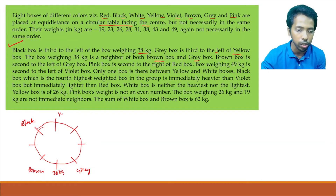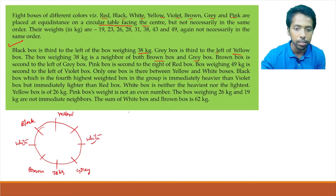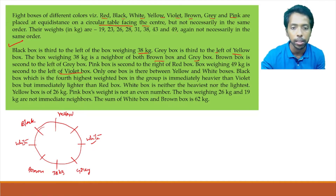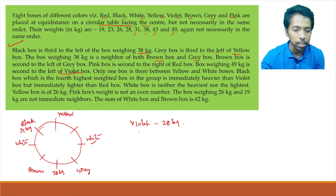Gray box is third to the left of yellow box, so yellow comes here. Only one box is between yellow and white, so white can come on either side — mark both as possible cases. Black box is the fourth highest weighted box, meaning weights ranked first through fourth give black box a weight of 31 kg. The fourth highest is immediately heavier than violet box, making violet 28 kg, and immediately lighter than red box, making red 38 kg.